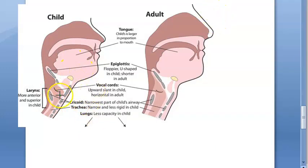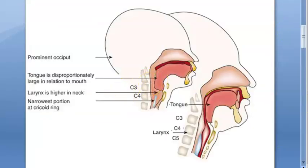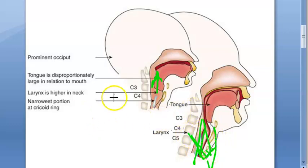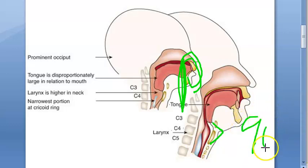For a child, the larynx is at a higher level. As they grow, the neck grows and the larynx descends. In adults, the vocal cord lies opposite C5. At puberty, the thyroid cartilage angle develops — this is when Adam's apple appears. In males, the thyroid angle is 90 degrees, giving a very prominent laryngeal prominence. In females, the angle is 120 degrees.